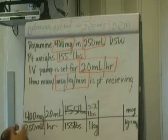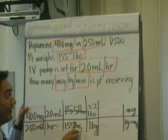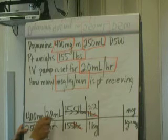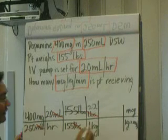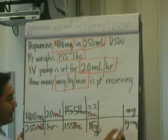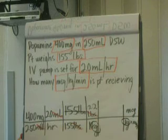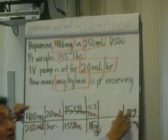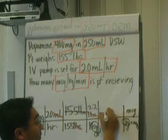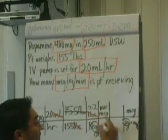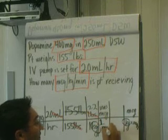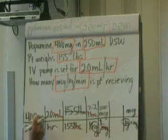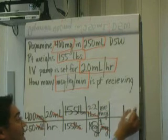Now we can go ahead and start canceling out some things. Cancel out pounds from the bottom with pounds from the top. Anything else? mLs from the bottom, mLs from the top. We've got kilograms — what else do we need? We need minutes, and we also need micrograms. We know micrograms is going to be on top because our ultimate answer has micrograms on top, so: 1,000 micrograms in 1 milligram. Now milligrams on the bottom cancels with milligrams on the top.